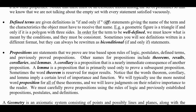Propositions are the fourth element of an axiomatic system. They are statements that we prove are true based upon rules of logic, postulates, defined terms, and previously proved propositions. Other names for propositions include theorems, results, corollaries, and lemmas. A corollary is a proposition that is nearly an immediate consequence of another proposition. A lemma is a proposition used primarily to prove a subsequent proposition — it's a less critical result used to prove something more important. A corollary is a less important result that follows immediately from a more general result.